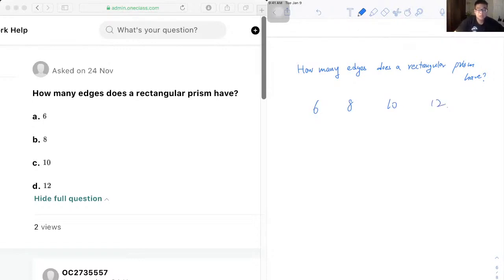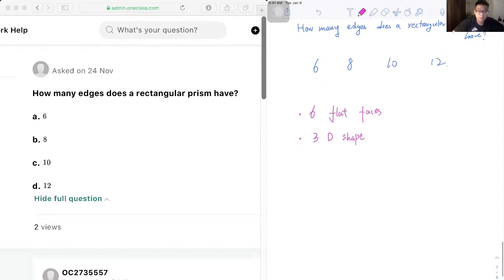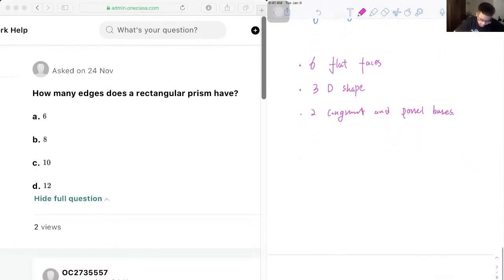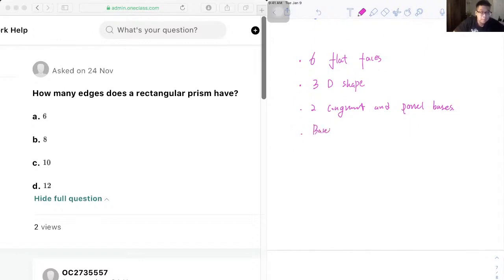So first let's define what is a rectangular prism. A rectangular prism is a polyhedron with six flat faces. It's a three-dimensional shape that has two congruent and parallel bases. The basis and the lateral faces of the rectangular prism must be rectangular.